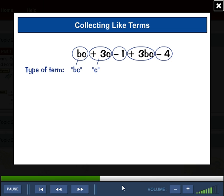The second one is a c term. Then we've got a number term, then a bc term, and then a number term. So now for collecting the like terms.